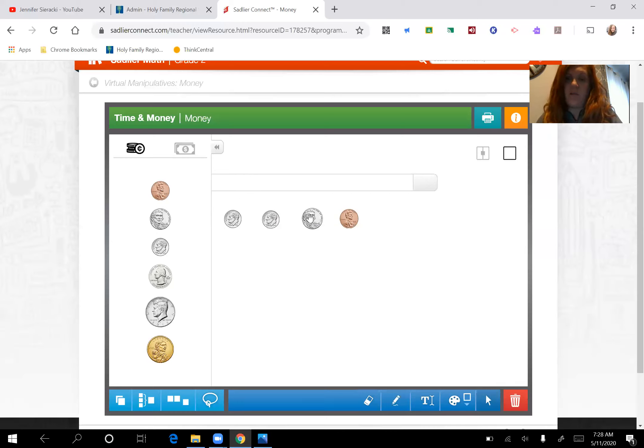So we have 10, 10, five, one. So you see how that goes from the highest amount down to the lowest amount. It's easiest to count your coins that way. So if we have these coins, I would have 10, 20, 25, 26.